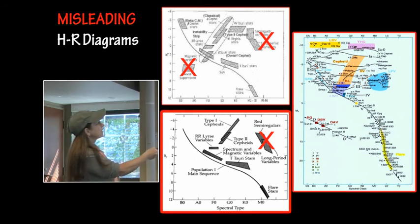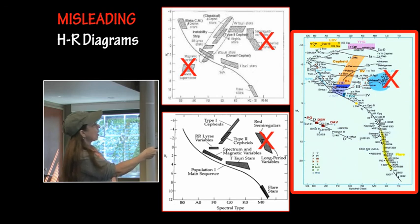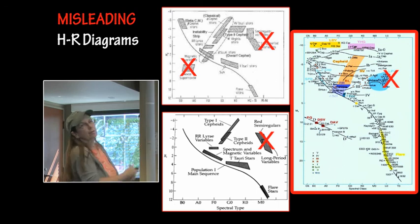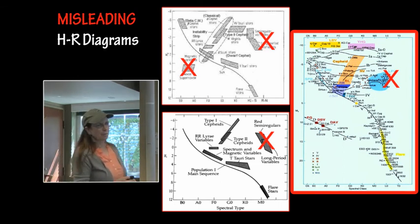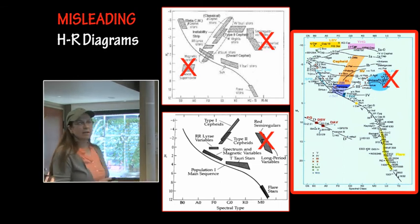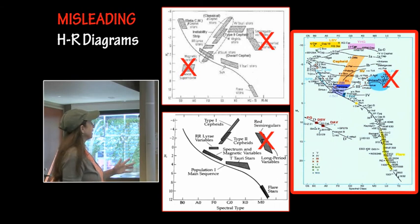And over here they've simply called this whole thing long period variables, but they've made no distinction. I mean, here's Mira, which they do have in here, which is a Mira variable. But up here is Betelgeuse, which is a semi-regular variable, which is also a long period variable. So pay attention to these HR diagrams that you come across and try to stay away. Don't get confused or misled by them because they are misleading and incorrect.